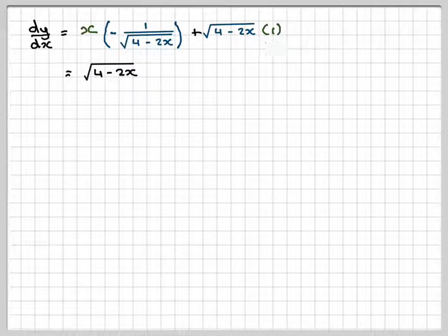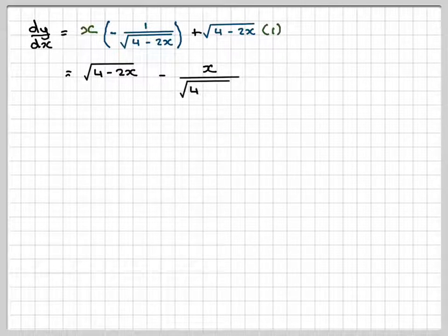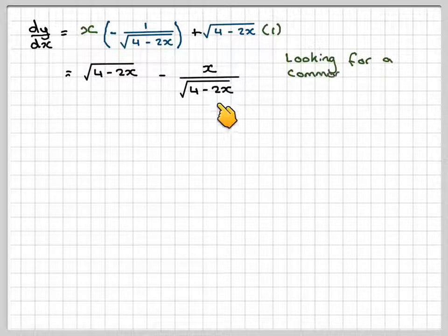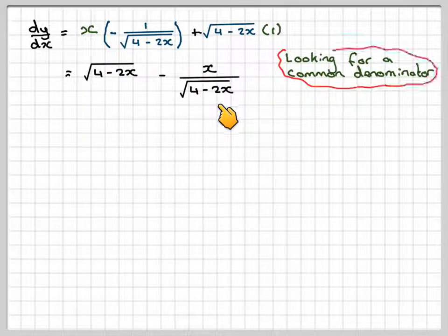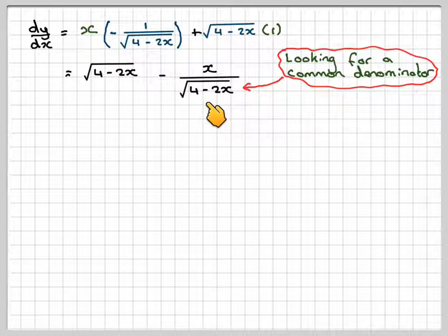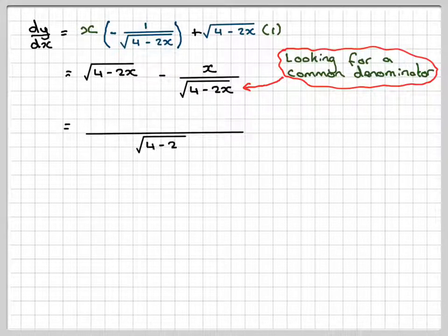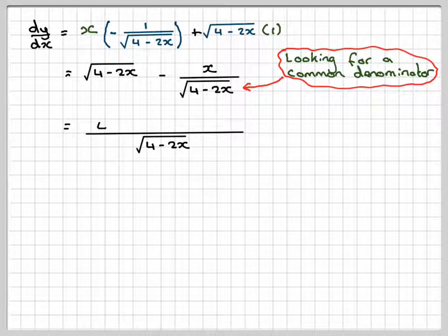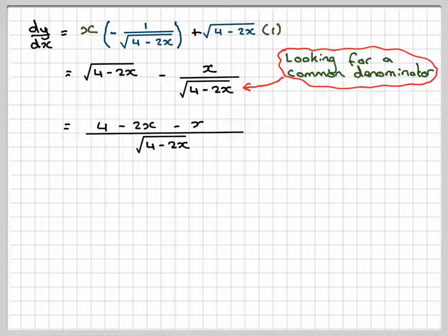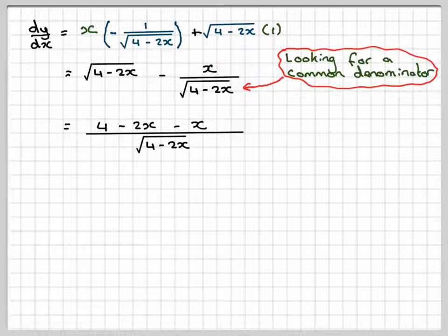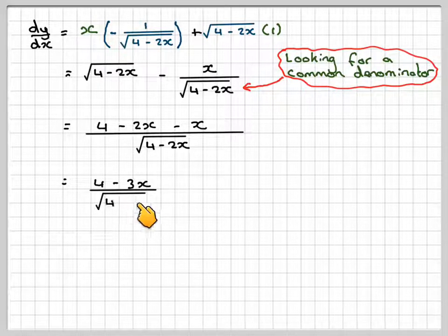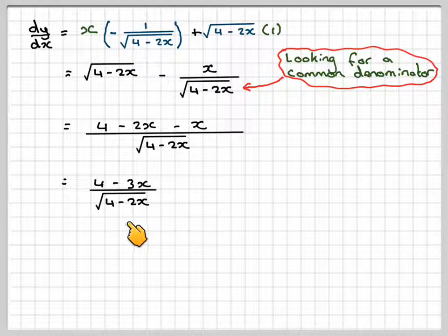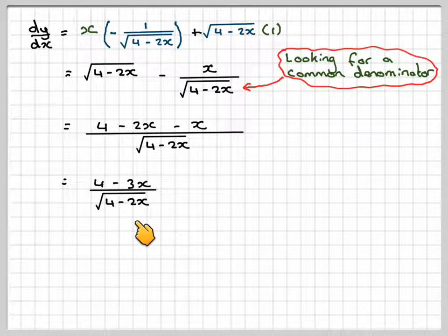I'm going to look for a common denominator. So if we make a common denominator of 4 minus 2x, this will become root times the root, which is 4 minus 2x minus x. And that's going to give me 4 minus 3x over the square root of 4 minus 2x.